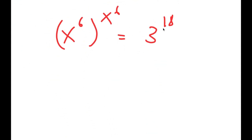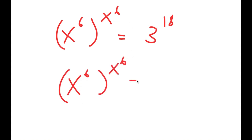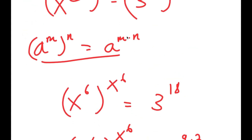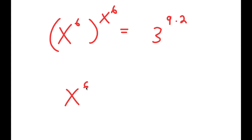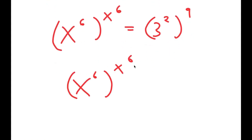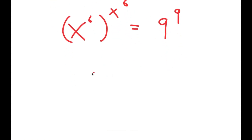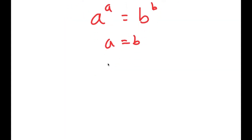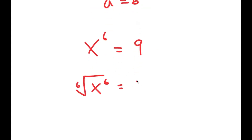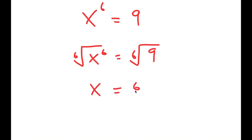From here I'm going to rewrite 3 to the power of 18 as 3 to the power of 9 times 2. Using the reverse of the power rule, this becomes 3 squared to the power of 9. And 3 squared is 9, so I get x to the power of 6 to the power of x to the power of 6 is equal to 9 to the power of 9. Because this is in the form a to the power of a equals b to the power of b, this means a equals b. So x to the power of 6 equals 9, and taking the 6th root on both sides gives x equals the 6th root of 9.